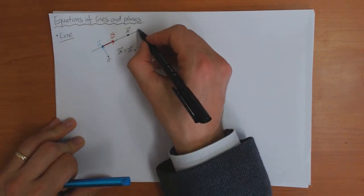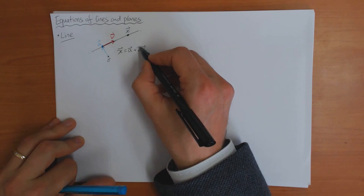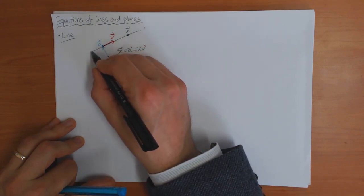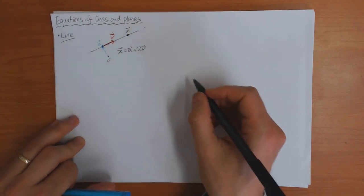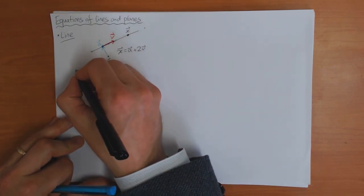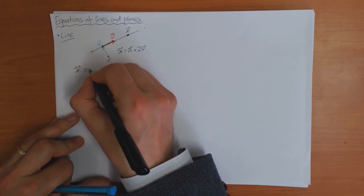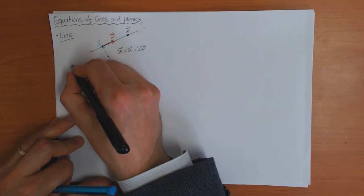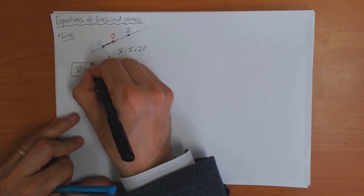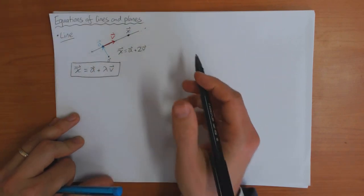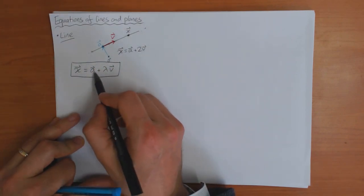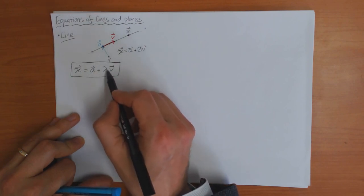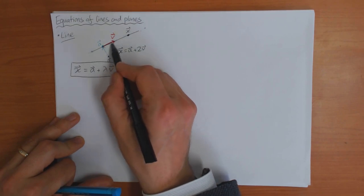It's clear that you can define any other point on this line just by changing that number. So a plus 3v will get me a point here, a minus v will get me here, a plus a half v is here. So in general, the equation of the line — any point x on the line — can be written as a plus some number lambda times v. So x is any point on the line, a is a specific point on the line that you know, lambda is any number, and v is a vector pointing along the line.